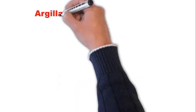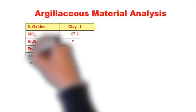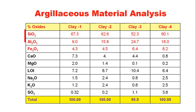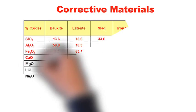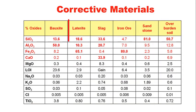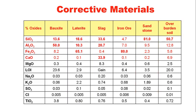For manufacturing of Portland cement, in addition to limestone we also need argillaceous material — clay material — which essentially contains silica, alumina, and iron components. This table shows four types of clay material which have a high amount of silica, more than 50 to 60%, and a certain amount of alumina. Depending on the chemical composition of limestone, one can choose clay or corrective materials like bauxite (high alumina), laterite (high iron), iron ore, sandstone, or overburden soil. The proportion of these corrective materials is decided based on the deficiency in the limestone chemical composition.